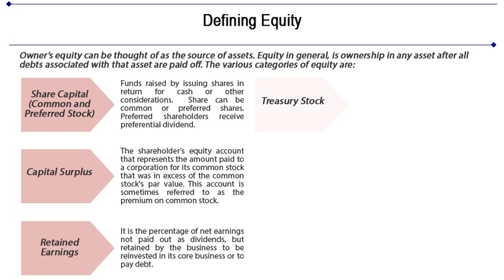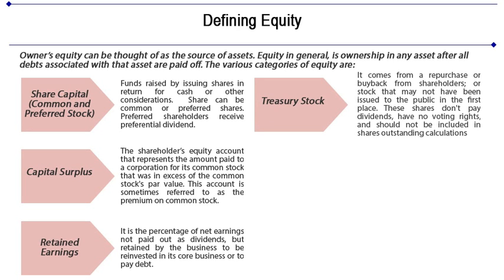Treasury stock comes from a repurchase or buyback from shareholders of stocks that may have been issued to the public in the first place. When shares are repurchased, they may either be cancelled or held for reissue. If not cancelled, those shares are referred to as treasury shares. Technically, a repurchased share is a company's own share that has been bought back after having been issued and fully paid. These shares don't pay dividends, they have no voting rights, and should not be included in the shares outstanding calculations, because technically a company cannot own its own shares.